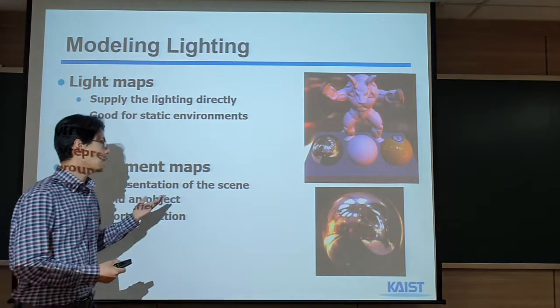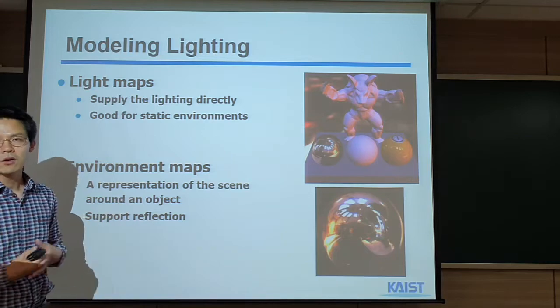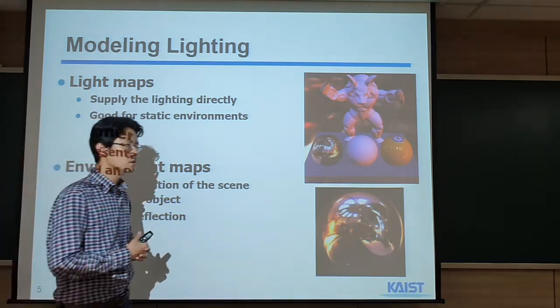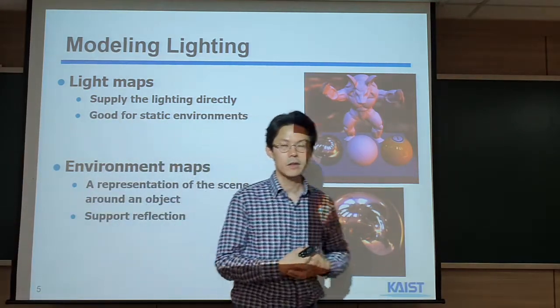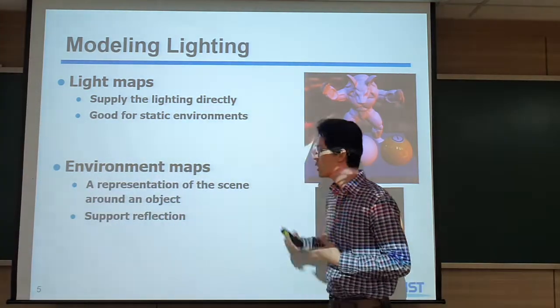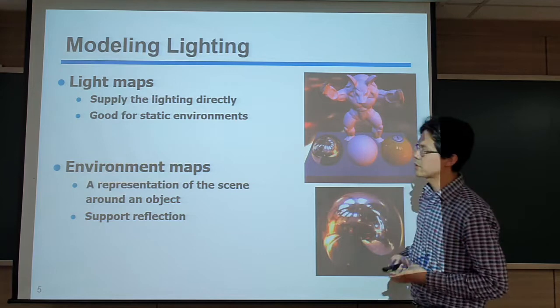We can capture this kind of environment map and use this spherical-shaped texture as lighting, instead of just using point lights. This is an example of the environment map — a representation of the scene around the objects. It can support lighting or reflection, which I'll show later on. This technique was proposed a very long time ago, but with the development of the 360 camera, it has become more popular.